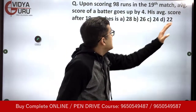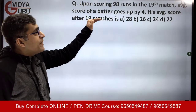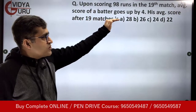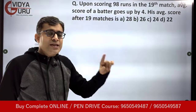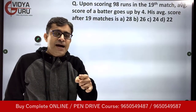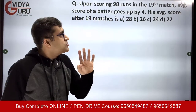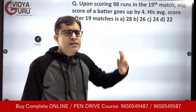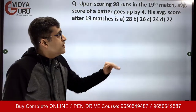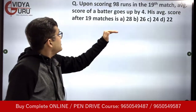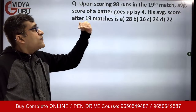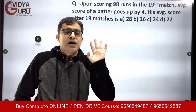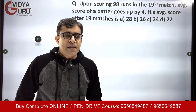Upon scoring 98 runs in the 19th match, the average score of a batsman goes up by 4. So in the 19th match he scores 98 runs and the average goes up by 4. His average score after 19 matches has to be found.